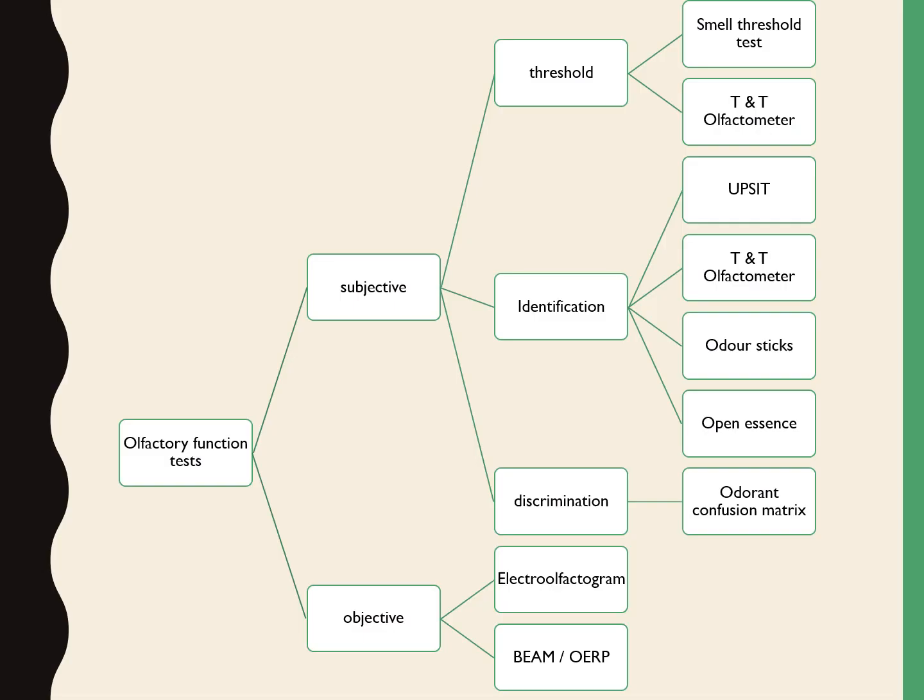Olfactory function tests can be divided into subjective and objective types. Subjective tests include threshold tests, identification tests, and discrimination tests. Examples of threshold tests are the smell threshold test and TNT olfactometer. Examples of identification tests are UPSIT, TNT olfactometer, autostics, and open essence. An example of a discrimination test is the odorant confusion matrix. Objective tests include the electro-olfactogram, BEAM (brain electric activity monitoring), and OERP (olfactory event related potential).